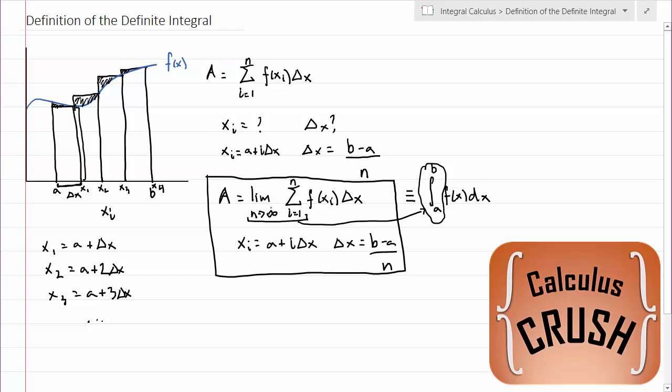So instead of writing this, limit as n goes to infinity, sum of i equals 1 to n, over and over, we've developed a new notation, which is the integral sign. That is where the integral sign comes from.